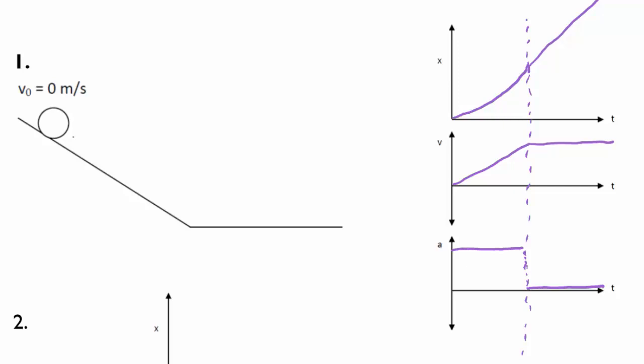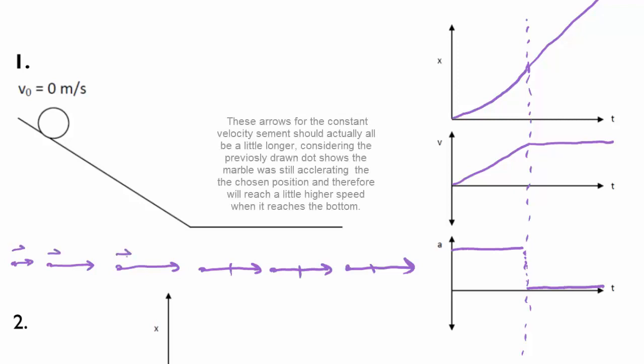And if I were to draw a motion map on here, we start out, we're speeding up. And when I hit the bottom, whatever speed I have is going to be constant. We could show that using a congruency line. Make sure that you have your acceleration vector pointing in the right direction when it is actually accelerating.